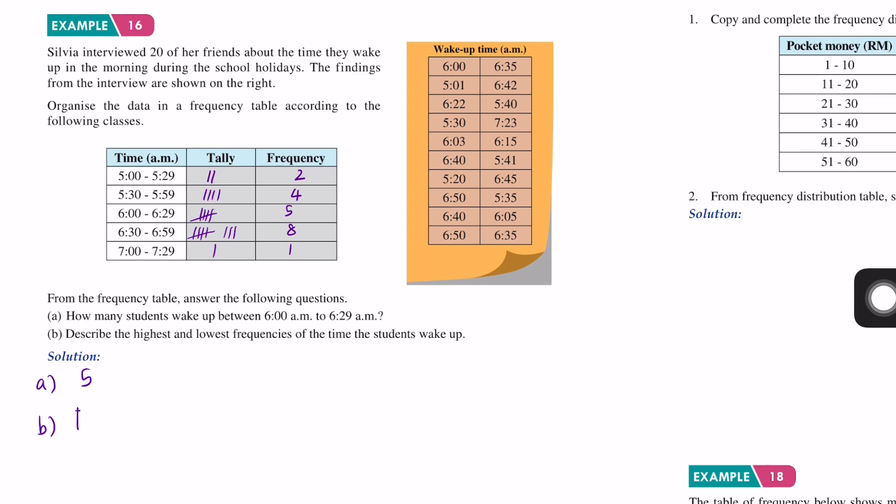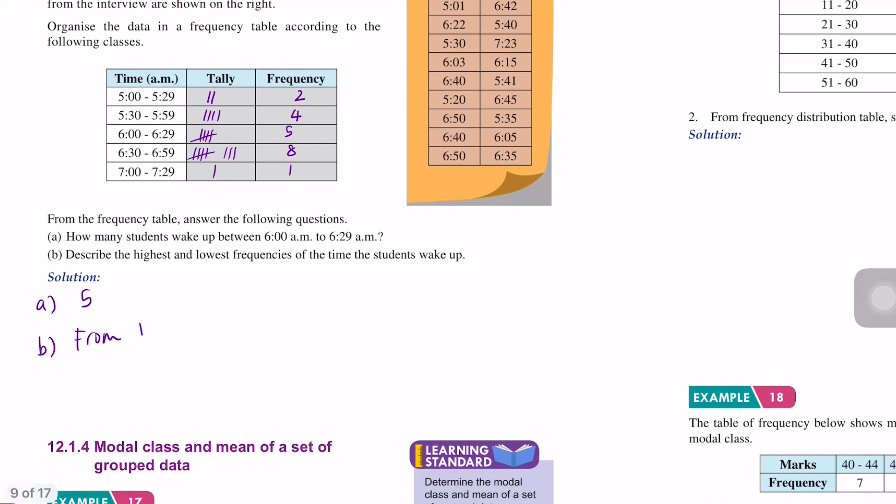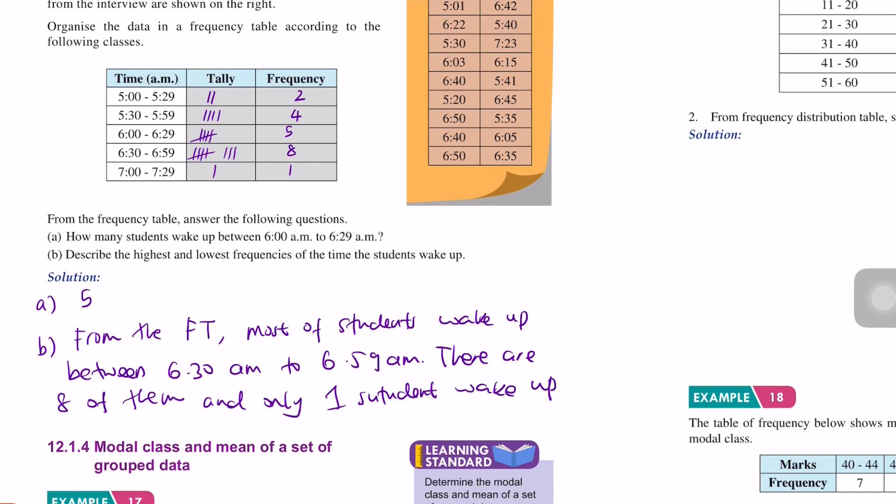Let's write it as a sentence. From the frequency table, most students wake up between 6:30 AM to 6:59 AM - there are 8 of them. Only 1 student wakes up between 7:00 AM to 7:29 AM.